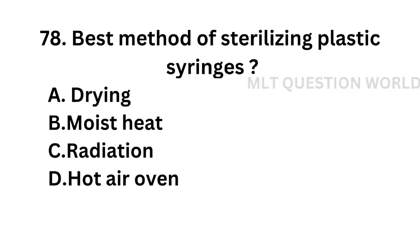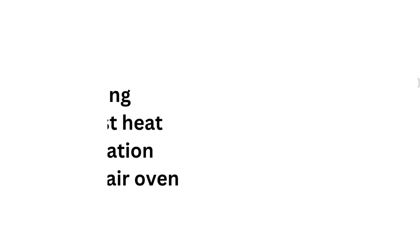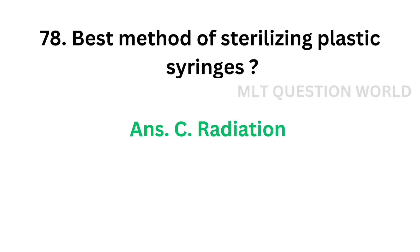Question number 78: Best method for sterilizing plastic syringes — Option A: Drying, Option B: Moist heat, Option C: Radiation, Option D: Hot air oven. The correct answer is Option C, Radiation. The best method for sterilizing plastic syringes is radiation.